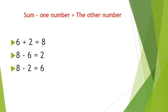Now look at the second equation. Here you will see that when you subtract 2, that is the other number, from 8, that is the sum, you will get the answer as 6, which is the first number.